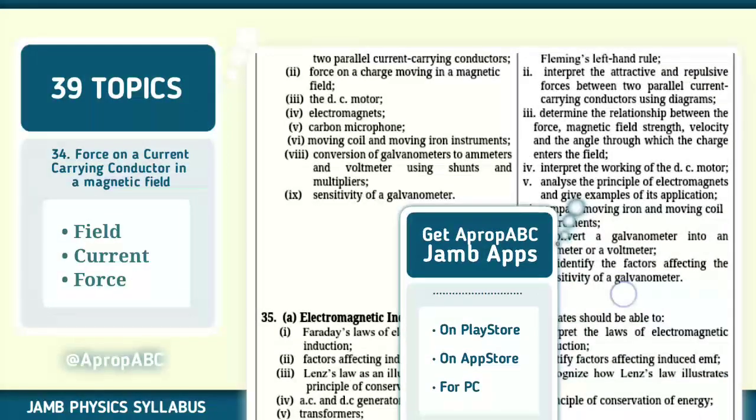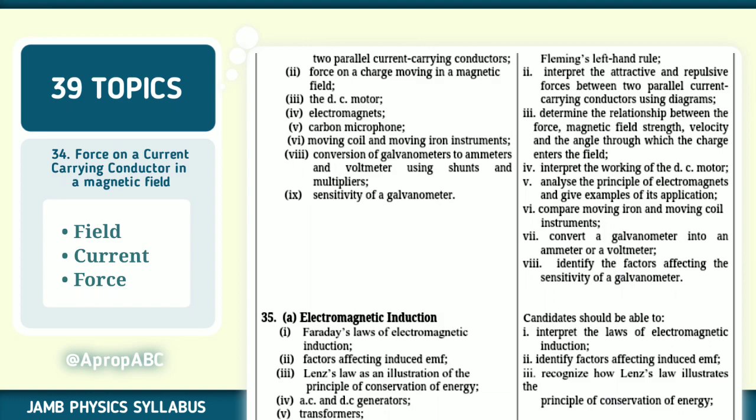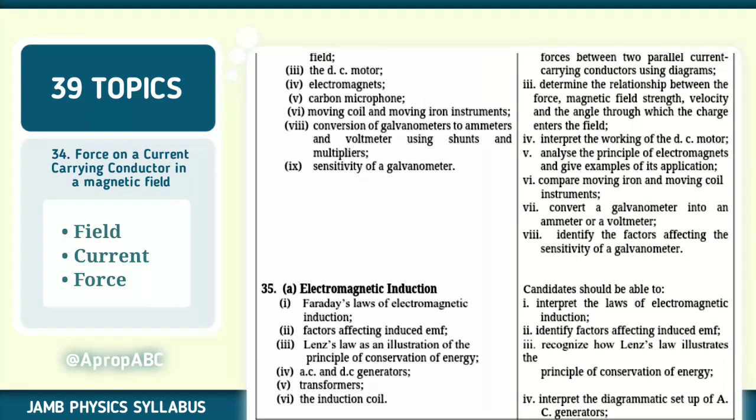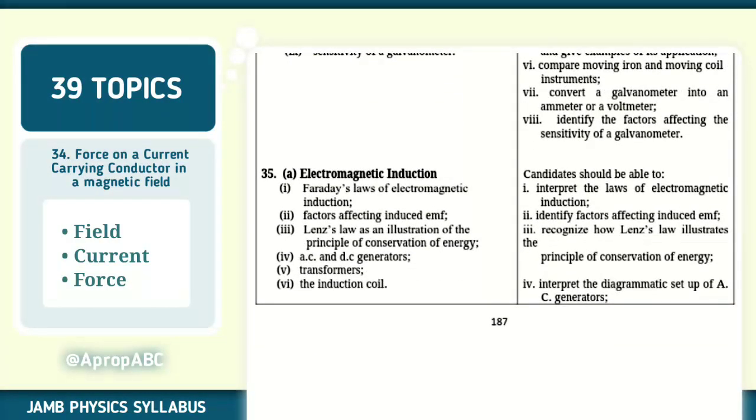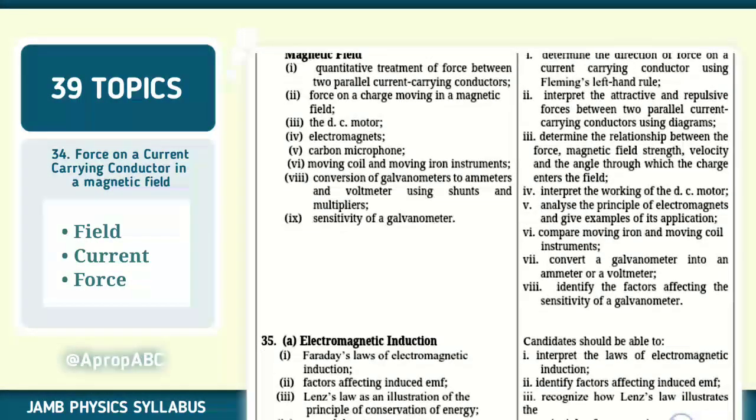Number 34 of 39, force on current conductor in a magnetic field. Quantitative treatment of force between current-carrying conductors. The DC motor, electromagnetic induction. Loudspeaker, microphone, sensitivity of galvanometer. Make sure you can convert galvanometer into an ammeter or a voltmeter. You can identify factors affecting the sensitivity of the galvanometer and the working of DC motor. Note AC and DC very well.